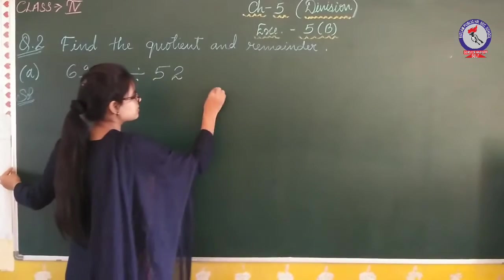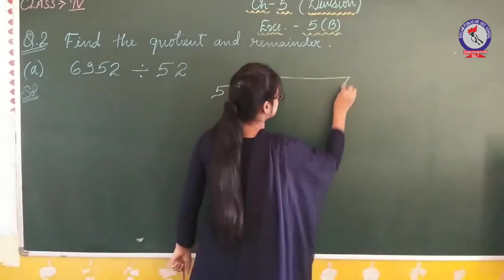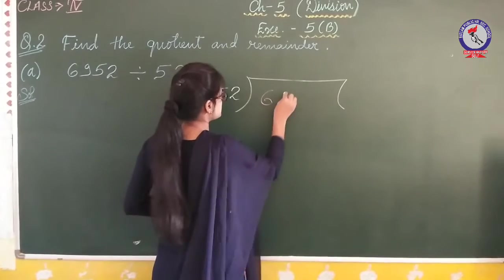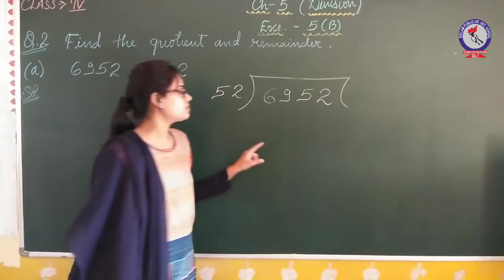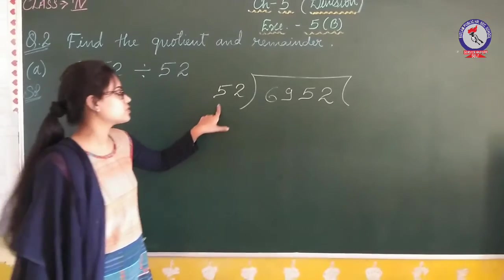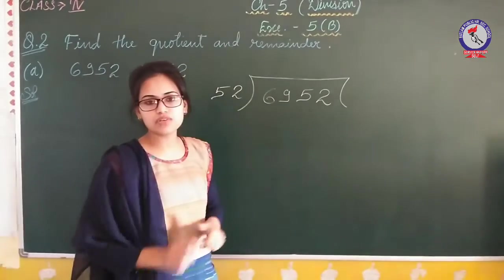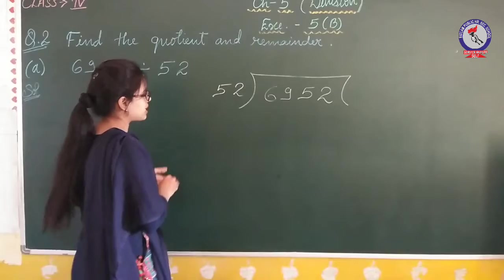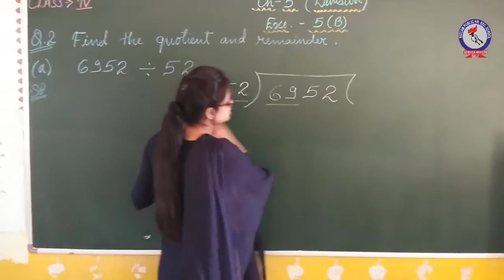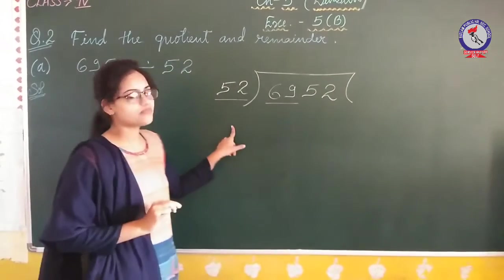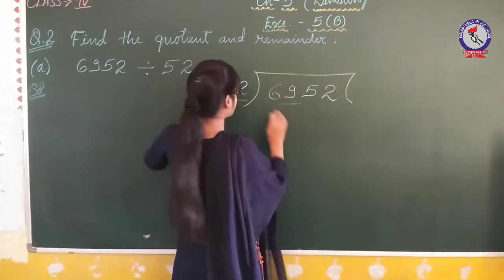Let's divide them. We have 52 and we are dividing 6952. The problem is that we don't have 52 directly, so we check our digits. We have 52 and we have 69, so we can divide them.